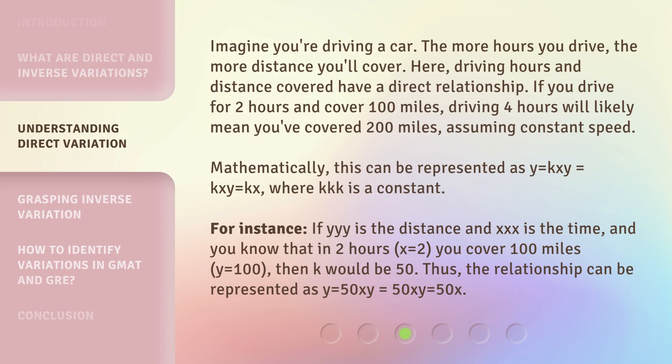Imagine you're driving a car. The more hours you drive, the more distance you'll cover. Here, driving hours and distance covered have a direct relationship. If you drive for two hours and cover 100 miles, driving four hours will likely mean you've covered 200 miles, assuming constant speed. Mathematically, this can be represented as y = kx, where k is a constant.